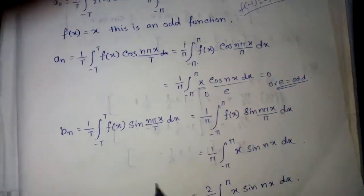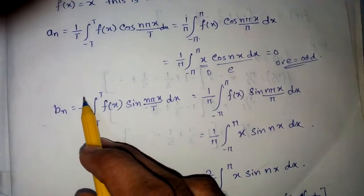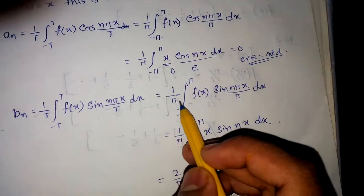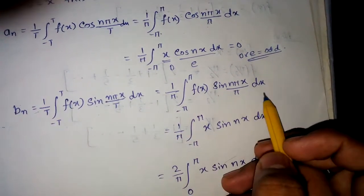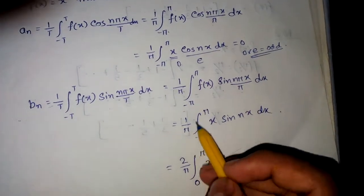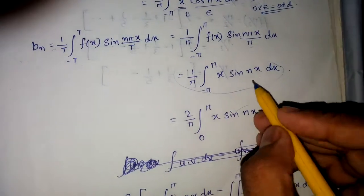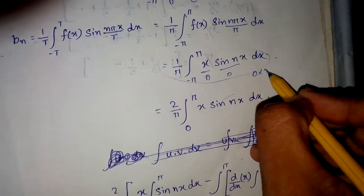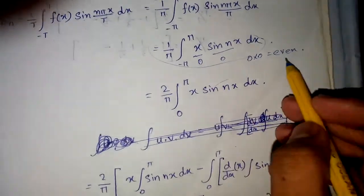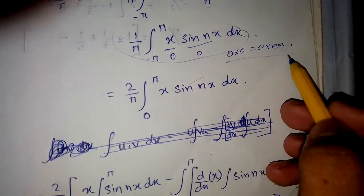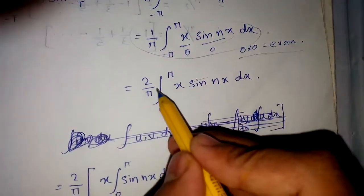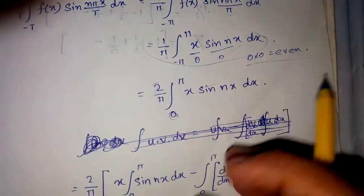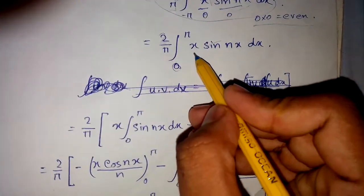Now let's calculate b_n. The formula is 1/t times the integral from minus t to t of f(x) sin(n pi x / t) dx. Replacing t with pi, the pi's cancel and we get 1/pi times the integral from minus pi to pi of x sin(nx) dx. Here x is an odd function and sin(nx) is also an odd function, so their product is an even function. By the property of even functions, we multiply by 2 outside and the lower limit becomes zero.